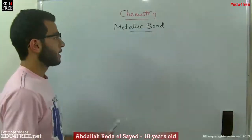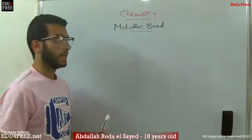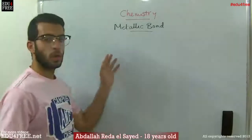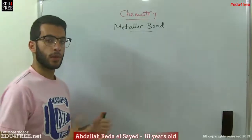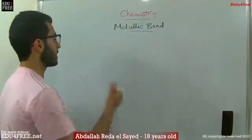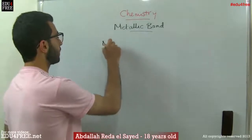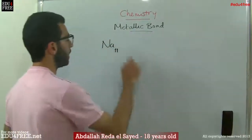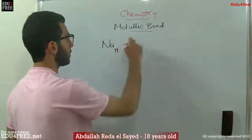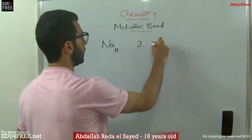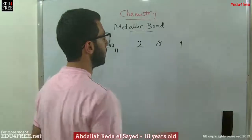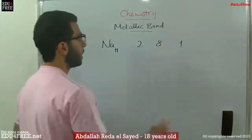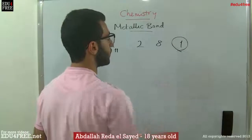This kind of bonding is very simple and it occurs in metals. As we know, metals always have free electrons in their outermost energy levels. For example, sodium has an atomic number of 11, so it has an atomic configuration of 2, 8, 1. And this electron is a free electron.